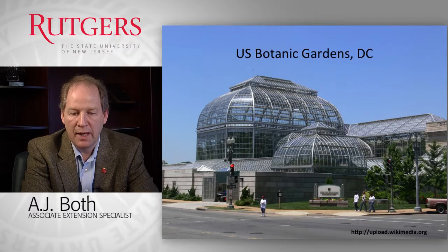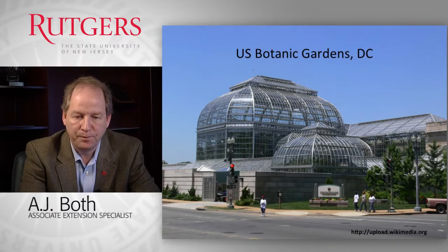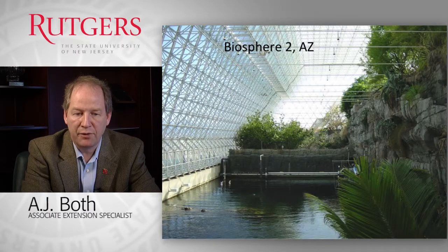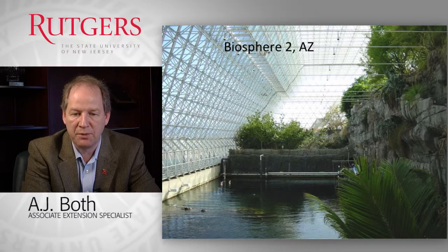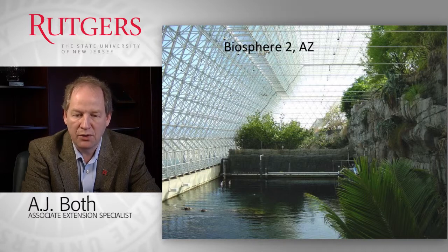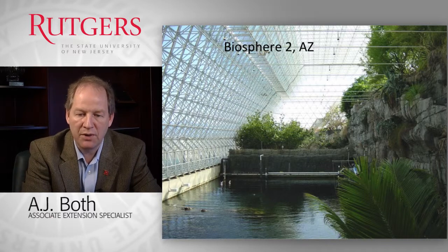Another different type of greenhouse is designed as a conservatory — here you see an example of the U.S. Botanic Garden in D.C. And then we have highly specialized greenhouses like the Biosphere 2 in Arizona, which was designed to maintain different ecosystems and simulate the biosphere as we know it on Earth. They have areas that mimic tropical environments, more temperate environments, or ocean environments, to try to simulate the interaction of all these different environments as it occurs on our planet.